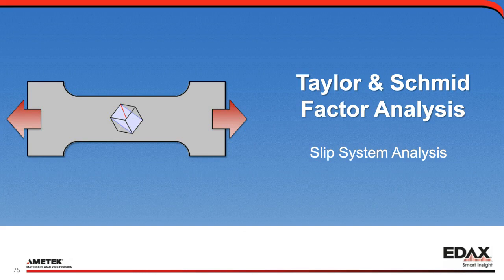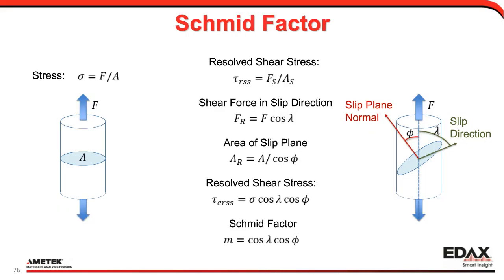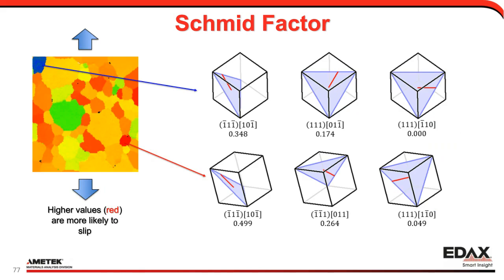Now let's talk about Taylor and Schmidt factor analysis. These are focused on slip systems and help us understand our material. The Schmidt factor is a pretty basic idea: you have a stress equal to force over area, but if you resolve it to a slip system you get a resolved shear stress. This is a geometric effect — we specify the slip system and then using the Schmidt factor we get an idea of how likely that slip system will be active. A blue grain here is less likely to slip, with its slip system not well oriented, whereas the higher-value red grains are more likely to slip.